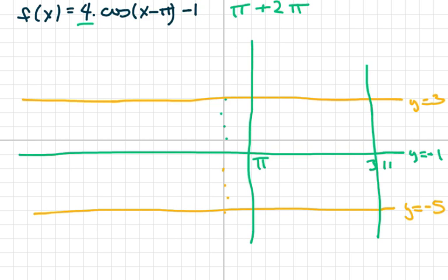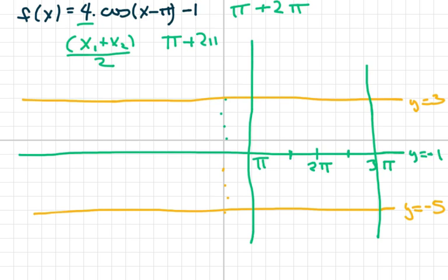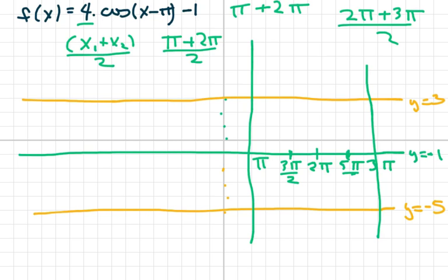Halfway between π and 3π is 2π. I use the midpoint formula: (x₁ + x₂) / 2. So I add π plus 2π all over 2 — this is going to be 3π/2. For the next point I add 2π plus 3π over 2, that gives you 5π/2. Now we're going to proceed and draw the cosine wave — the characteristic curve — and it looks something like that.